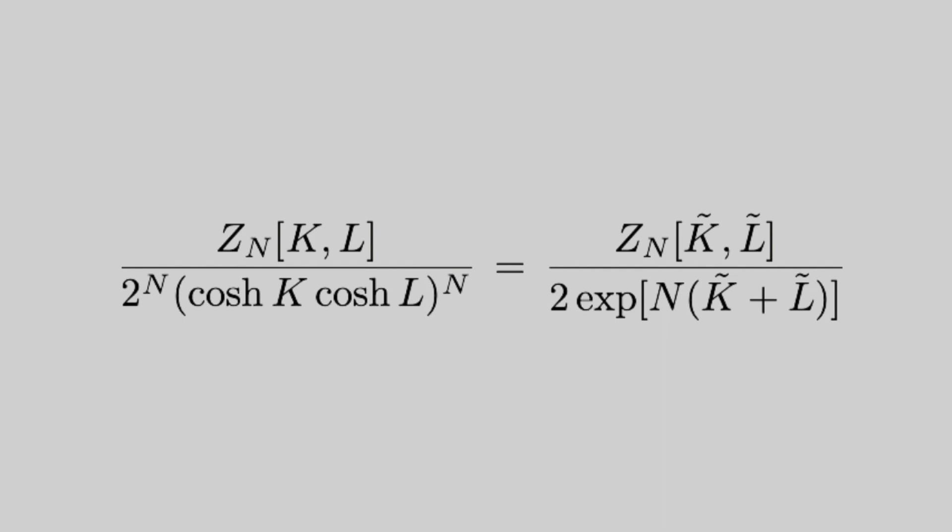We referred before to K and L during the high temperature expansion, and then K tilde and L tilde more recently for the low temperature expansion. But because of this equation, it means we can actually vary K and L by decreasing the temperature of the left hand side until we cross over the critical temperature and enter the low temperature phase. When we cross over the critical temperature, we must have that K equals K tilde and L equals L tilde.